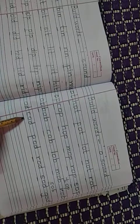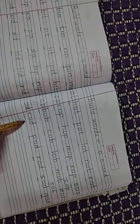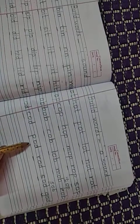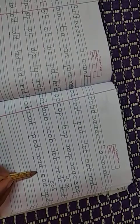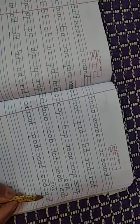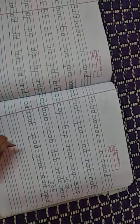Then comes OD words. Then comes OD words. OD means C, OD, cod. P, OD, pod. R, OD, rod. S, OD, sod. G, OD, God. Right children? Yes.